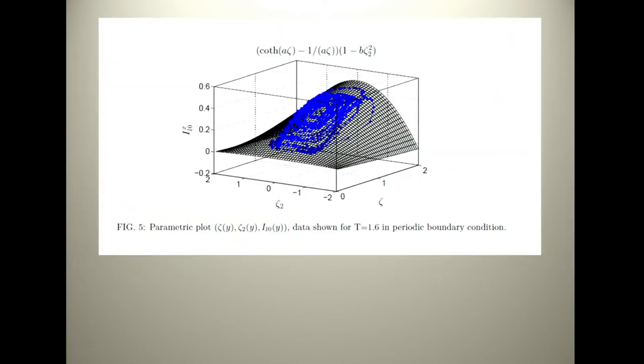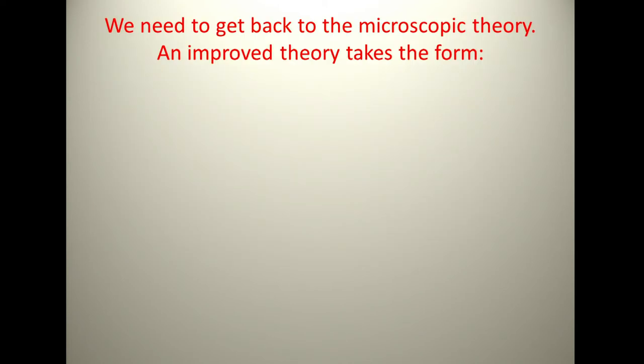If you do now this fellow as a function of two of these guys, the zeta and the zeta 2, there are two dimensionless variables. Suddenly the thing falls on the surface. So again, it's a function. If you have two closing variables, it looks much better. But now you see this needs more. We need to get back to the microscopic theory and improve the theory.